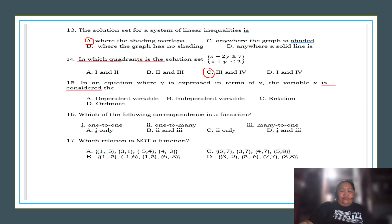Next, number 15. In an equation where Y is expressed in terms of X, the variable X is considered the blank. A, dependent variable. B, independent variable. Or C, relation. Or D, ordinate. So, X can be considered as independent variable.